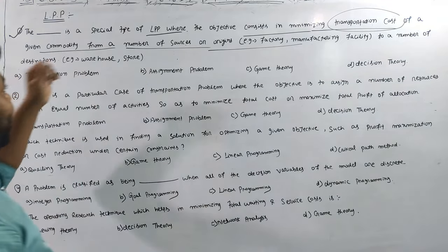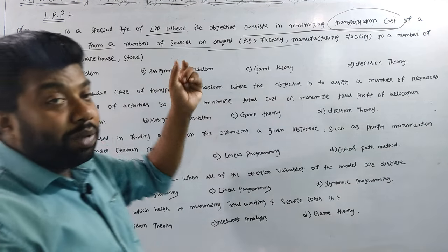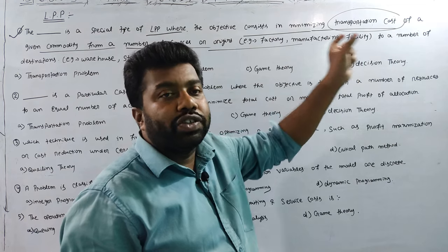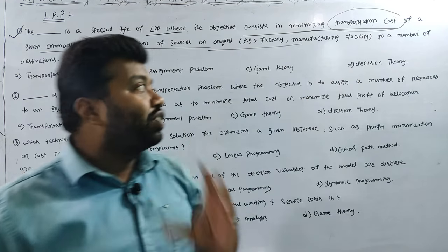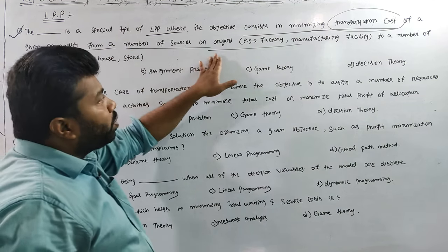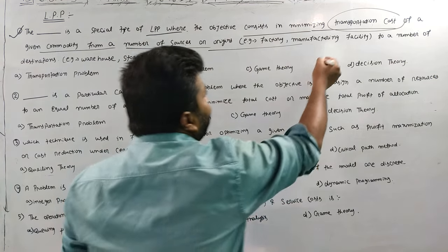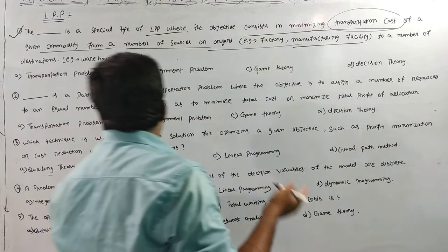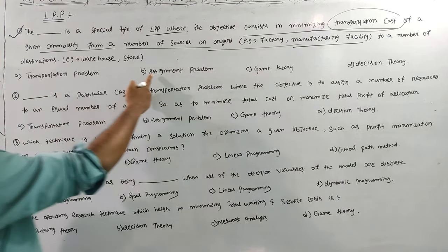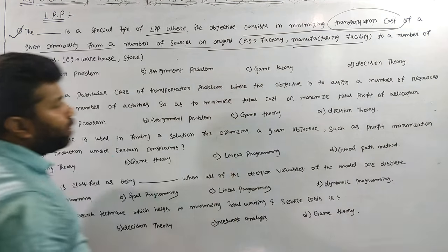This is a special type of LPP where the objective cost is to minimize the transportation cost. The transportation cost is minimized for a given commodity from number of source to origin. This is the factory manufacturing problem with number of destinations. So, whatever problem - transportation problem, assignment problem, game theory, decision theory.